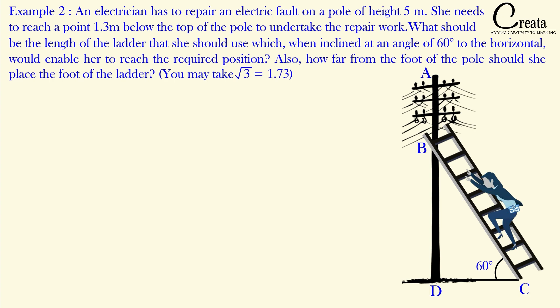Example 2: An electrician has to repair an electric fault on a pole of height 5 meters. She needs to reach a point 1.3 meters below the top of the pole to undertake the repair work. What should be the length of the ladder she should use, which when inclined at an angle of 60 degrees to the horizontal would enable her to reach the required position? Also, how far from the foot of the pole should she place the foot of the ladder? You may take √3 as 1.73. Our first step is to visualize the question and identify a right angle triangle.